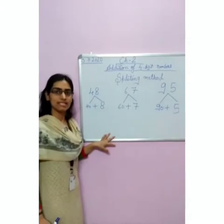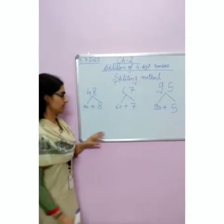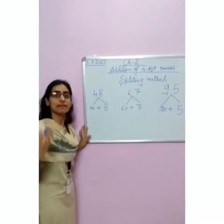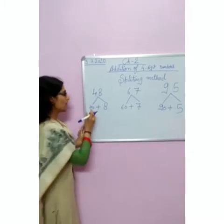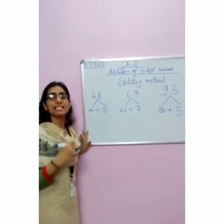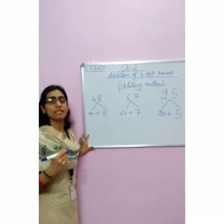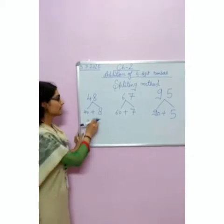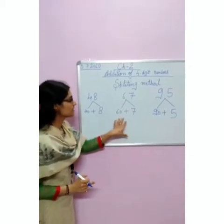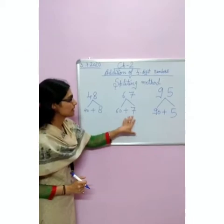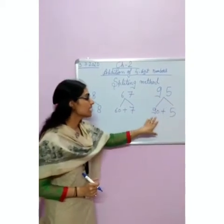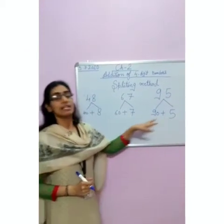Now, see the examples of the splitting method. We have 48. How will we split 48? 40 plus 8. As we do in the expanded form, in the same way we will split the digits. 67 becomes 60 plus 7. 95 becomes 90 plus 5.